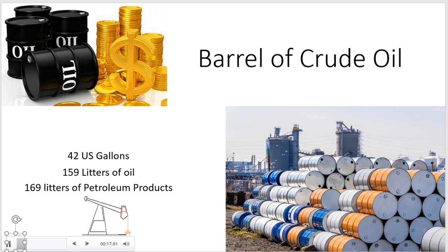It should be noted that many people mistakenly believe that the volume of a barrel of crude oil is the same as a normal barrel, which is 200 liters, but this information is incorrect. A barrel of crude oil contains 42 U.S. gallons, and a U.S. gallon contains 3.785 liters, so a barrel of crude oil contains 159 liters — 42 by 3.785 equals 159 liters.